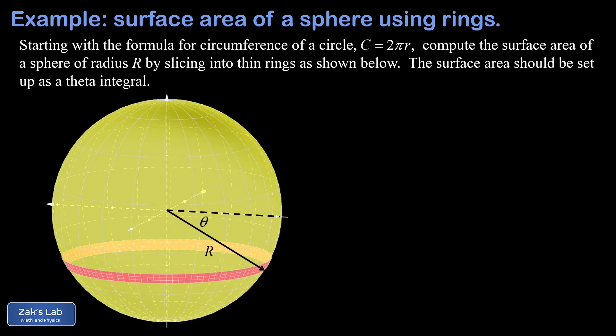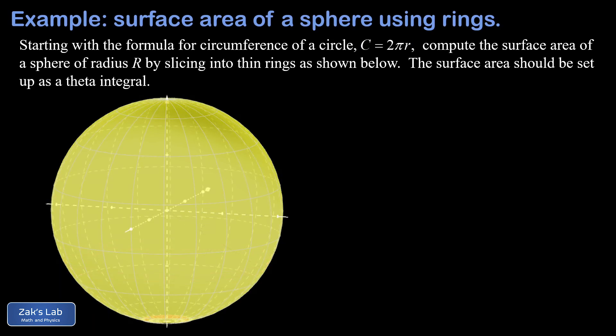To illustrate how these rings build up the entire surface, we can see in the animation that as we start at the south pole of the sphere, that would be a theta of negative pi over two, we have rings of very small radius, and then as theta increases, the radius of the rings grows.